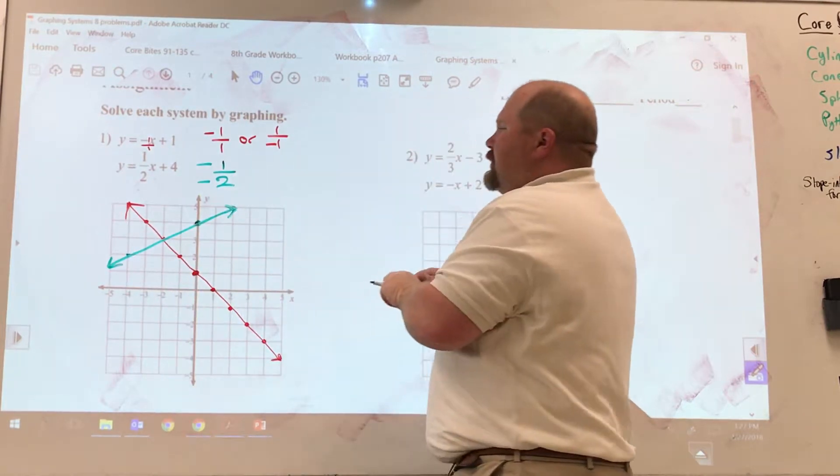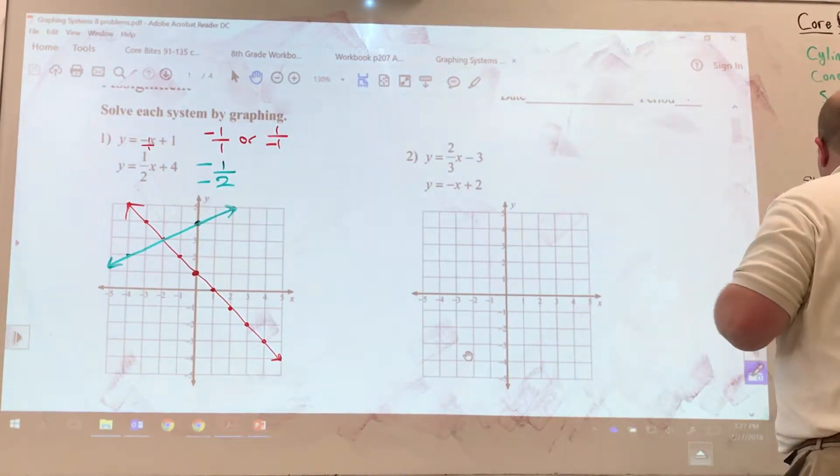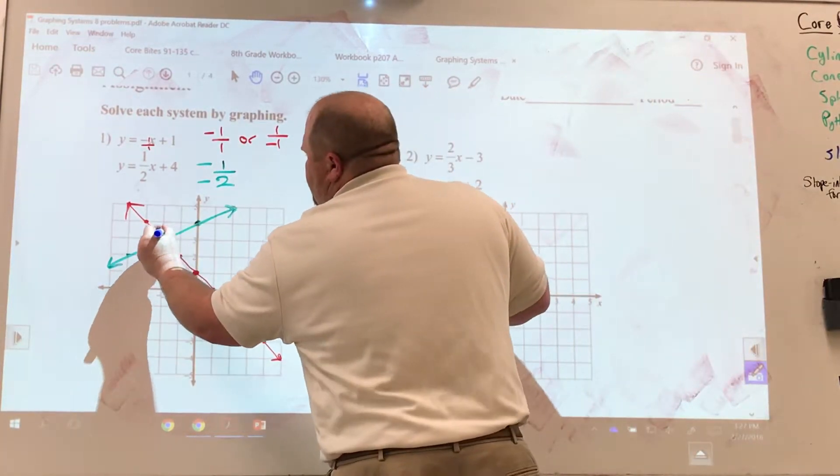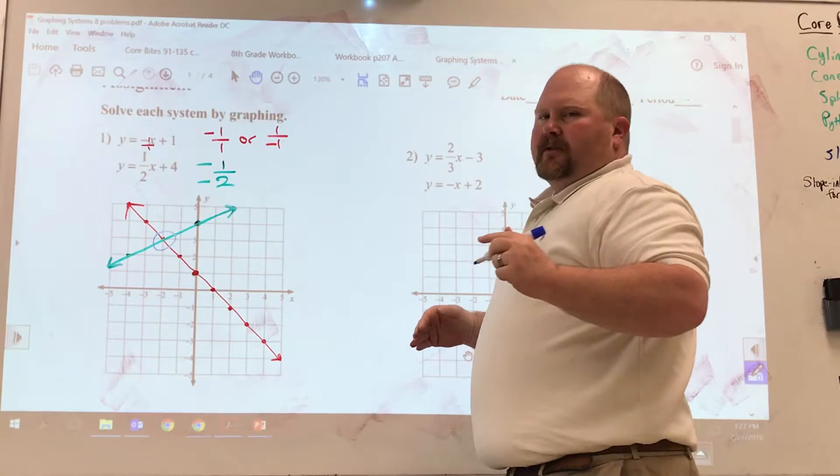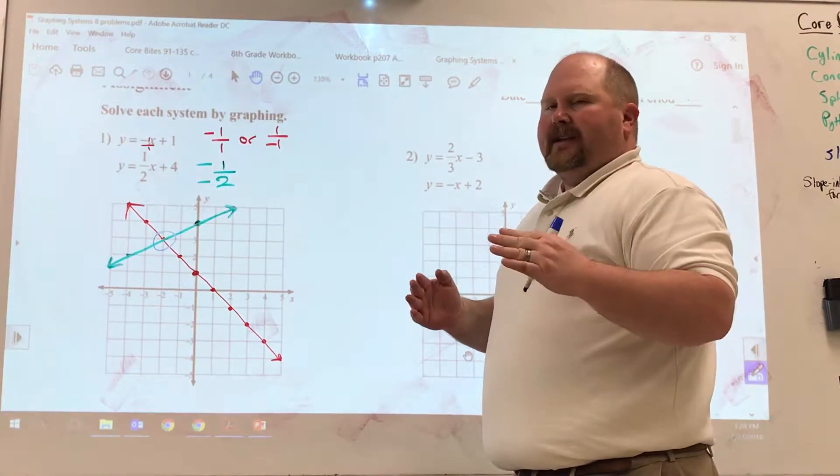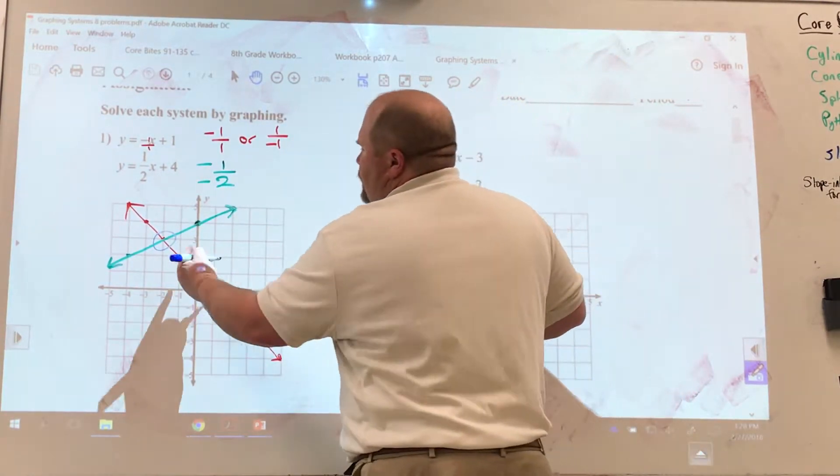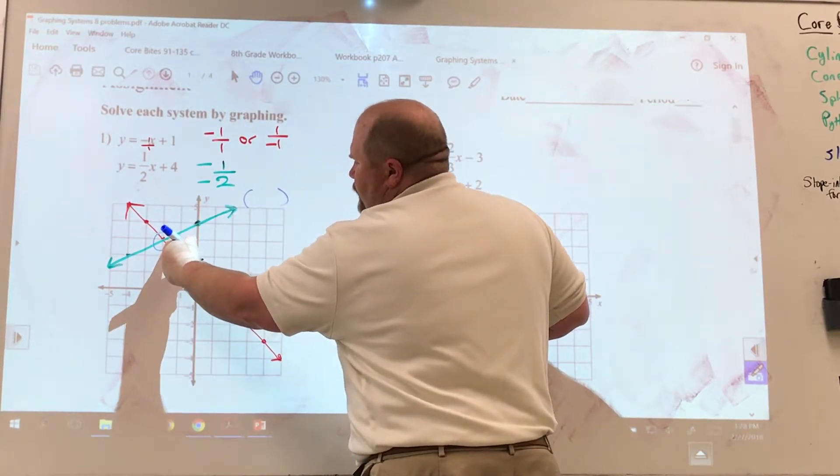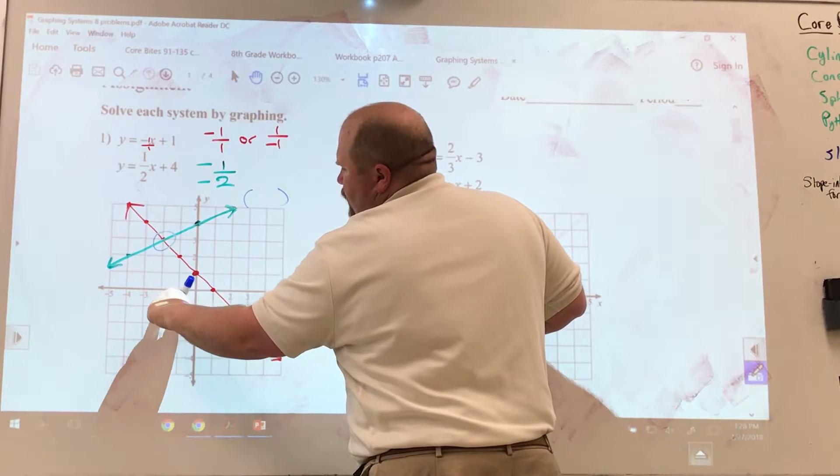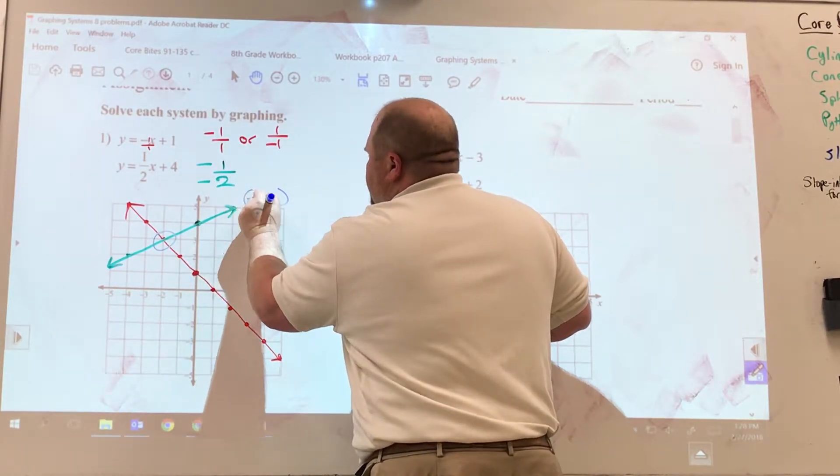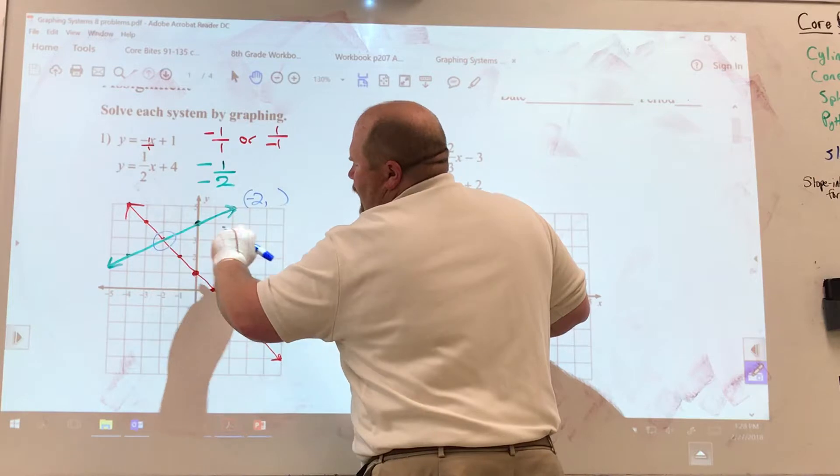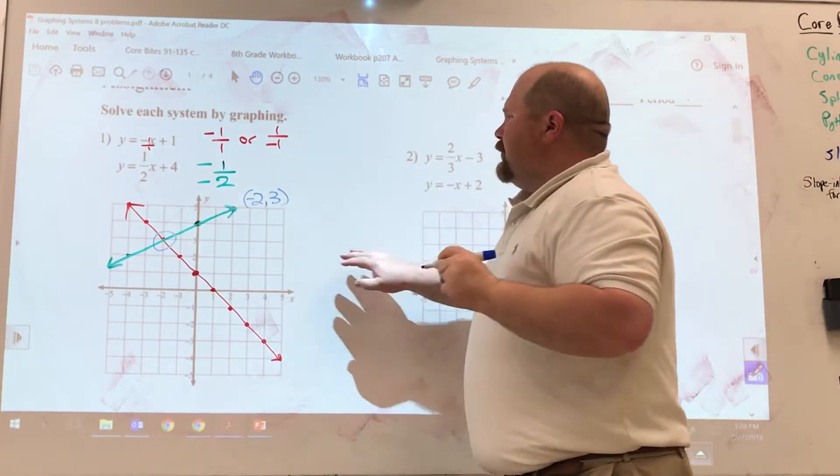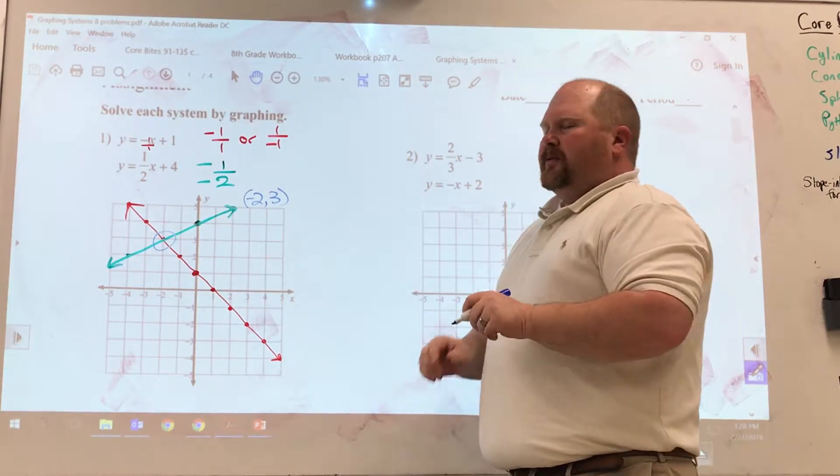And so we do have a solution. This is a one-solution equation, or a one-solution systems problem. The solution is where the two functions, or the two equations, the two lines, where they intersect is my answer. And so this answer would be the coordinate right here where they cross. In this coordinate, the x value would be a negative two, comma, and then we look to see how high up we are on the y value. The y value is a three. So the answer would be negative two, comma, three for problem number one.